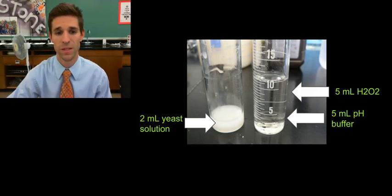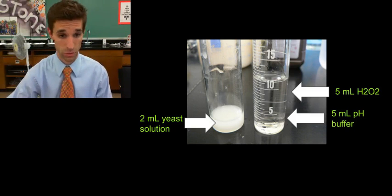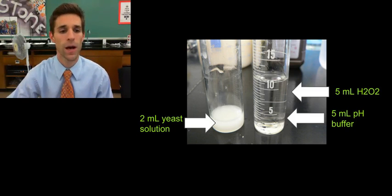And also 5 milliliters of the pH buffer solution. That makes the overall solution of the hydrogen peroxide in the buffer whatever pH the buffer solution is designed for. And then we're going to add that to only 2 milliliters of yeast solution. Lots of yeast cells in just 2 milliliters, so that's enough for our chemical reaction.